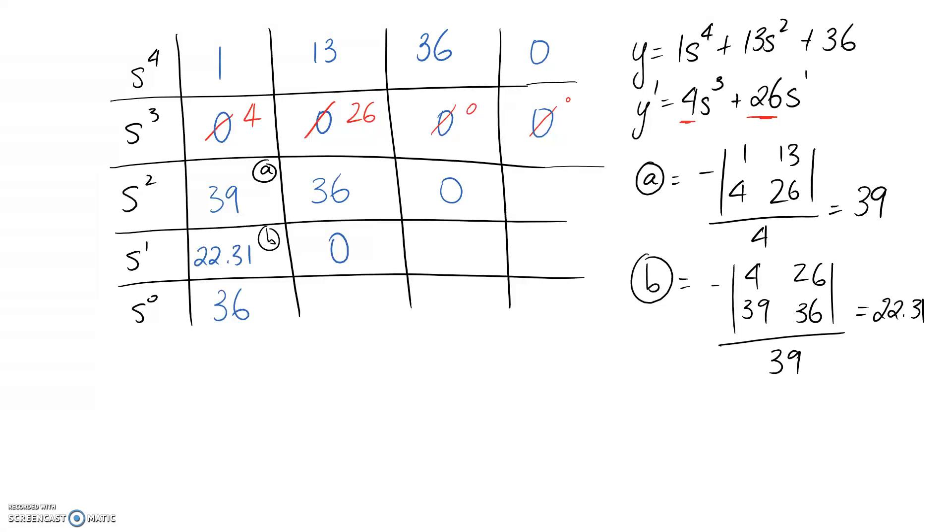So the question asked us how many poles we have on the right-hand side of our imaginary axis. So all we need to do is count up the number of sign changes we see in the first column. So we go from 1 to 4. These are both positive numbers, so there's not going to be a sign change. 4 to 39, again, they're both positive, so there's no sign change. This one here, again, both positive, no sign change. This one here, again, positive, so no sign change. So what this is telling us is that we've got no poles on the right-hand side of the imaginary axis.